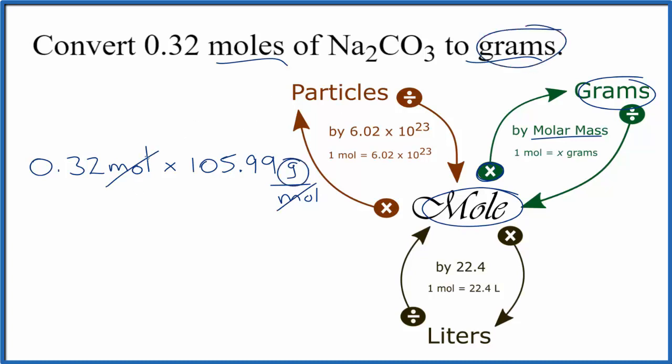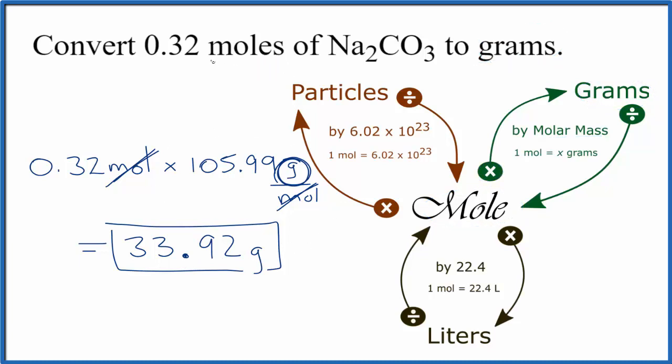We know we've done it correctly when the units cancel out, leaving us with the desired unit. We do the multiplication and we get 33.92 grams of sodium carbonate. So to recap, we took our moles of sodium carbonate